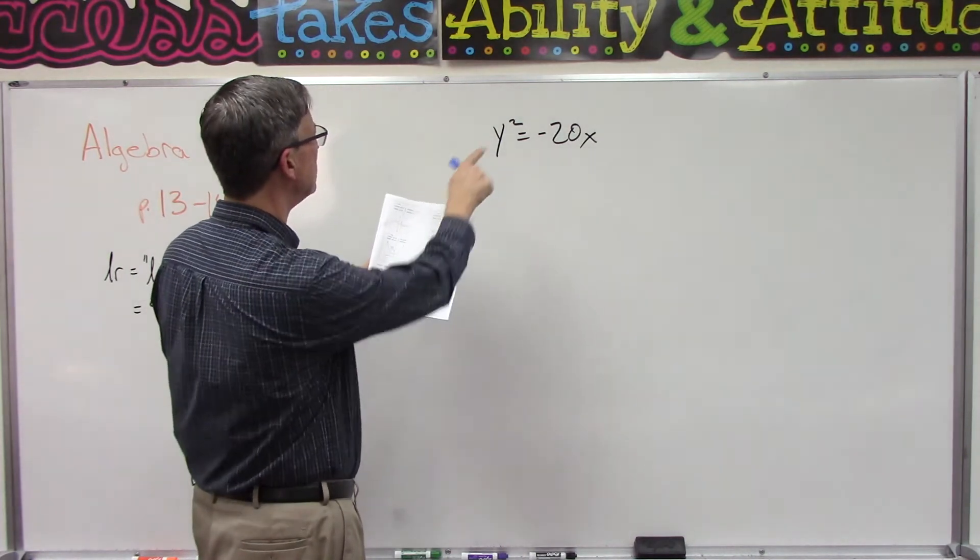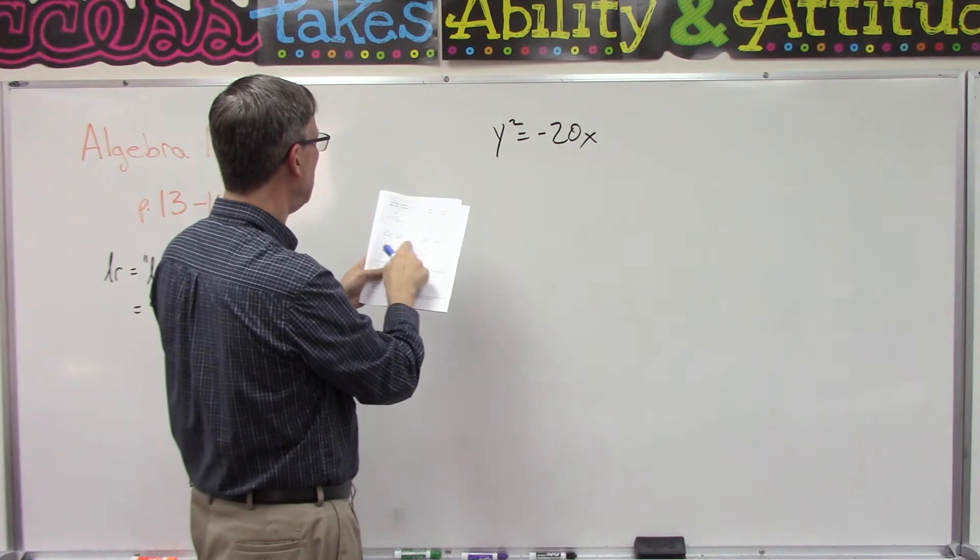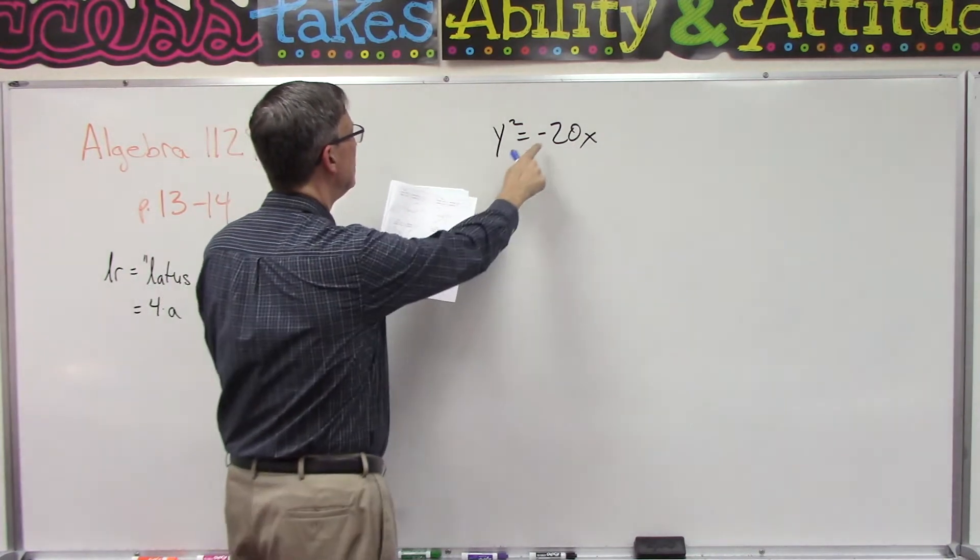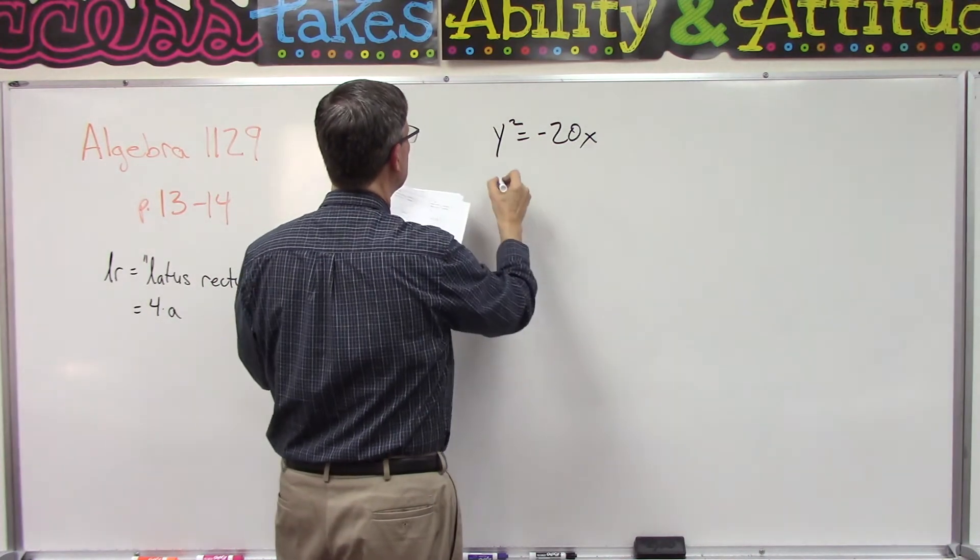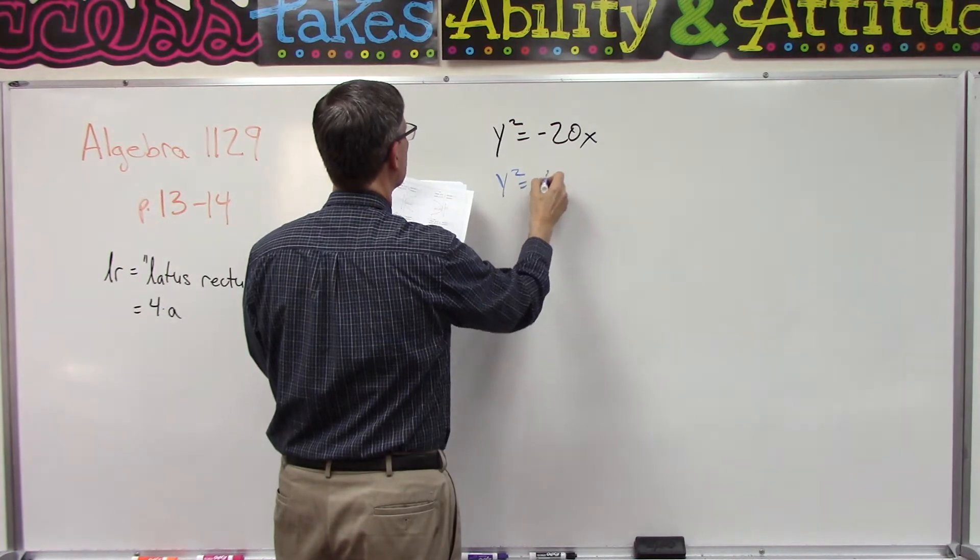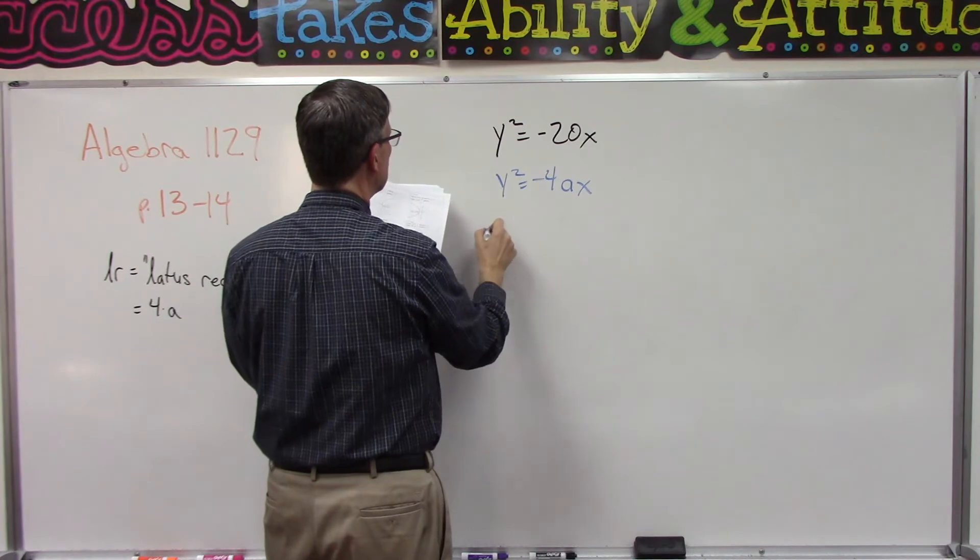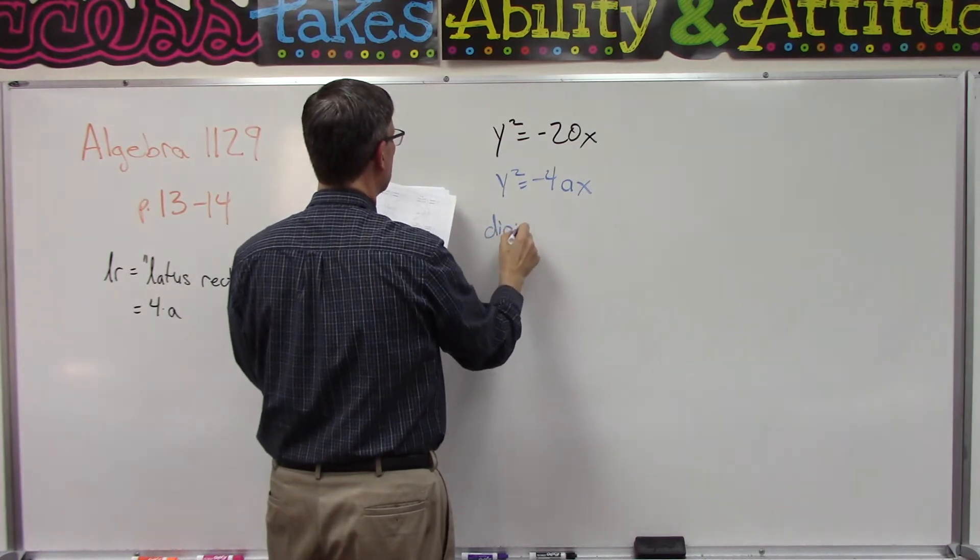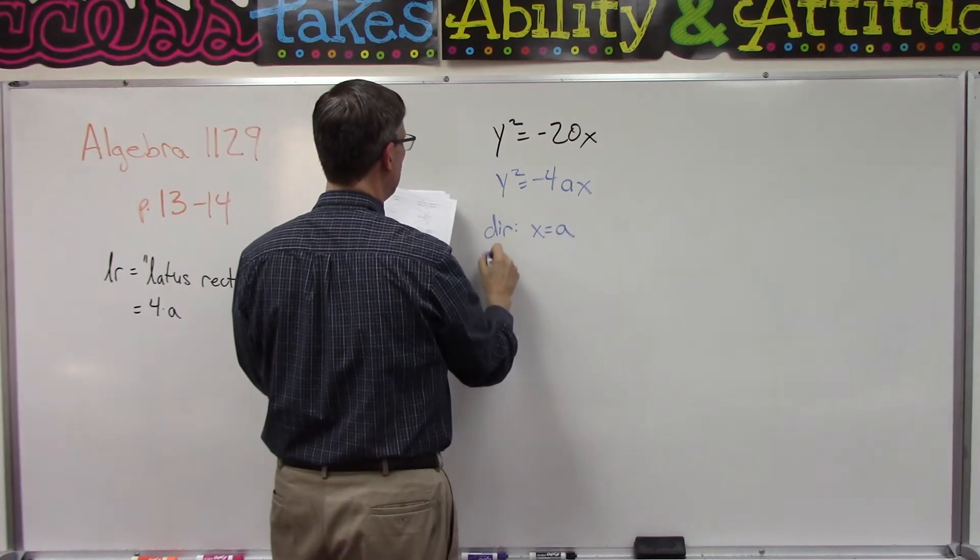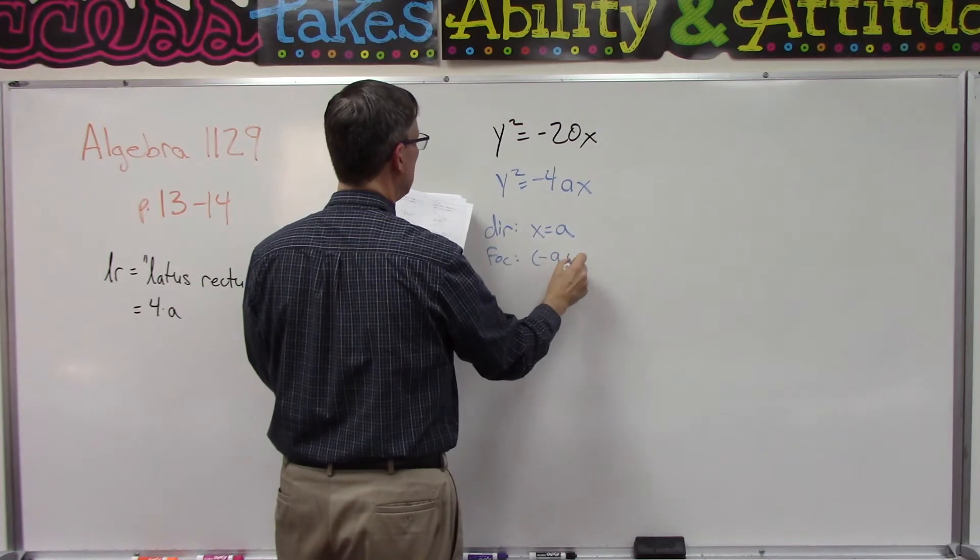The top two are y² and the bottom ones are x², so I'm thinking it's negative and negative. Let's take this template: y² = -4ax.